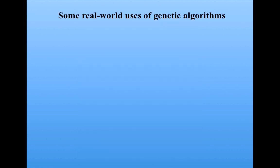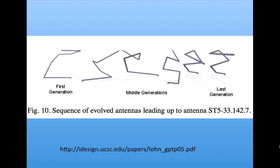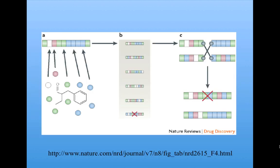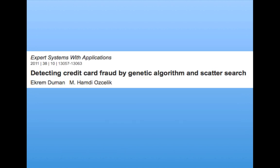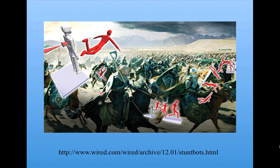Here are some examples of real-world uses of genetic algorithms, just to give you a sense of the diversity of applications. GAs have been used to design parts of aircraft by GE and Boeing, and also by NASA to design antennae for spacecraft. John Deere and company have used genetic algorithms to optimize assembly line scheduling. They've been used by several companies to assist in automated drug discovery. GAs have been used to learn to detect fraud in credit card transactions and financial trading. They've been used to develop programs for the automated analysis of satellite images at Los Alamos, and to generate realistic computer animation in several movies, including Lord of the Rings and Troy.